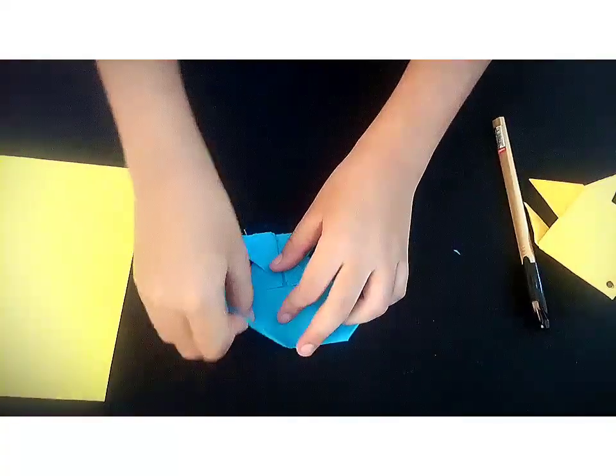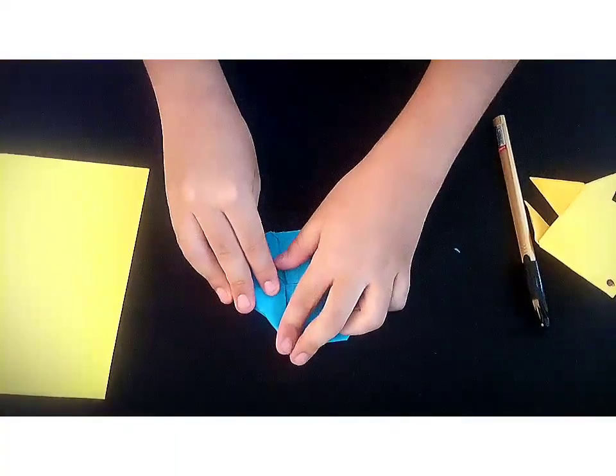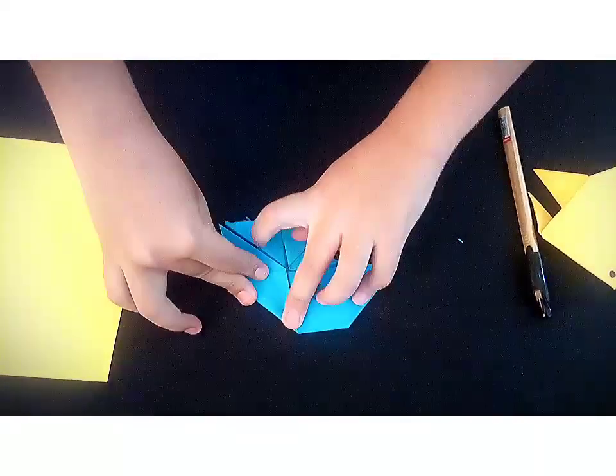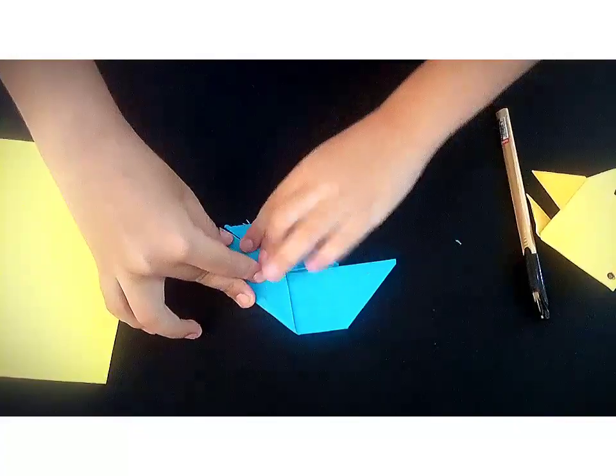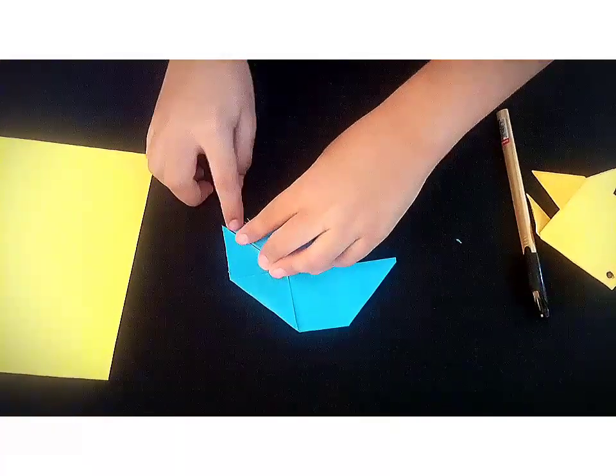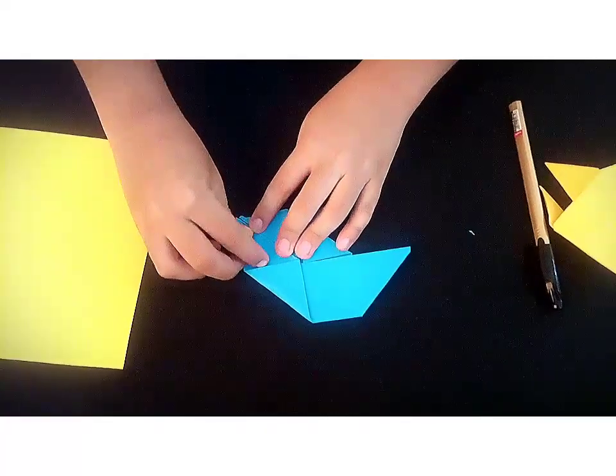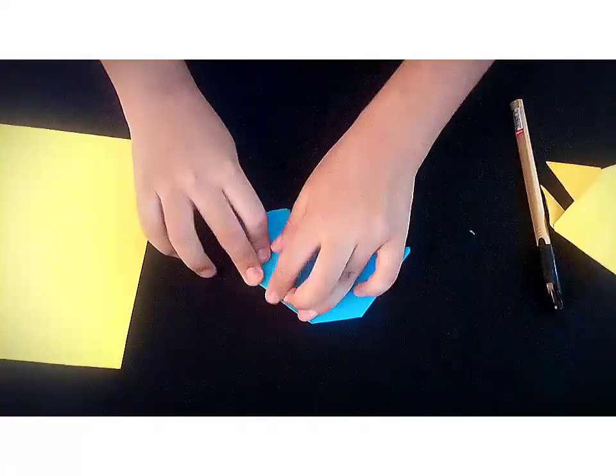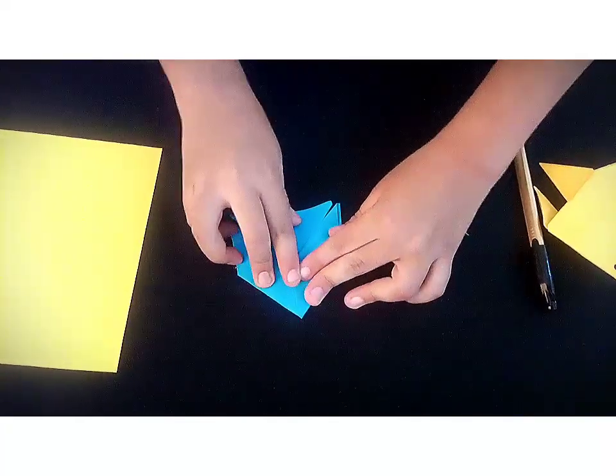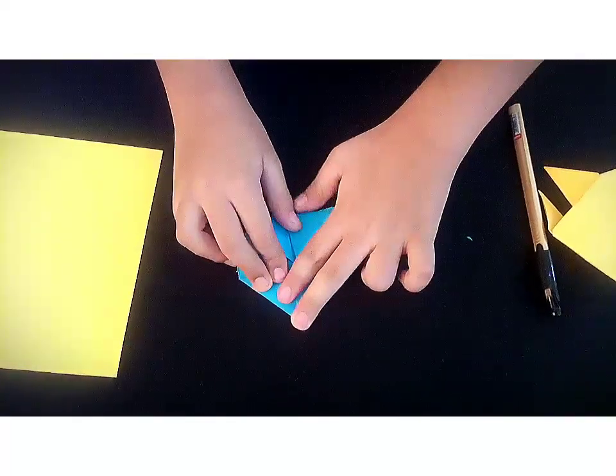And now you will take this corner here and you will do it when this line is exactly with this line. And then crease it. And now you will do the same for the other one.